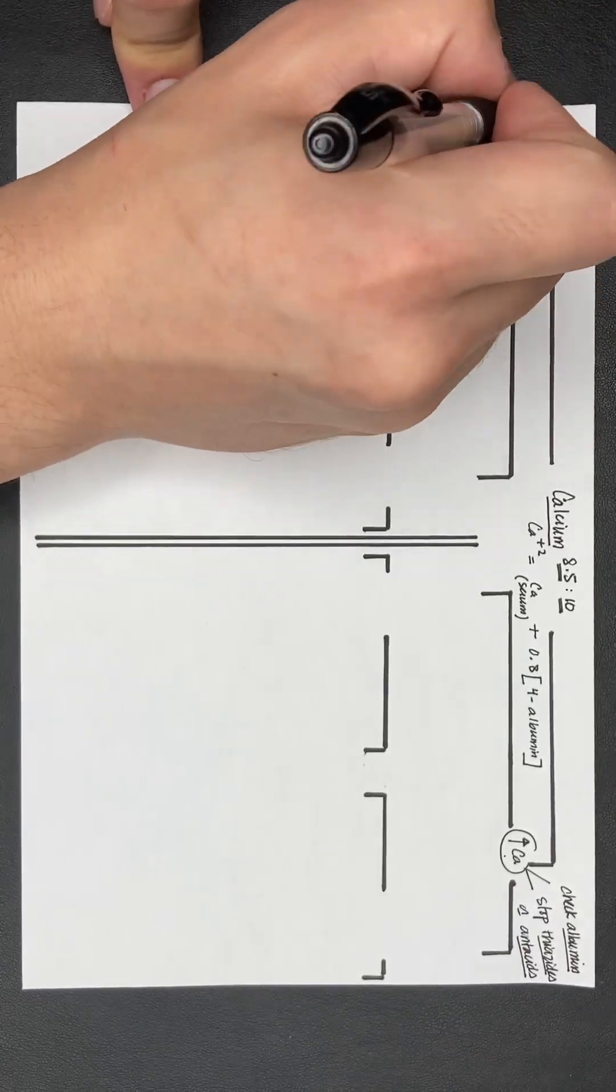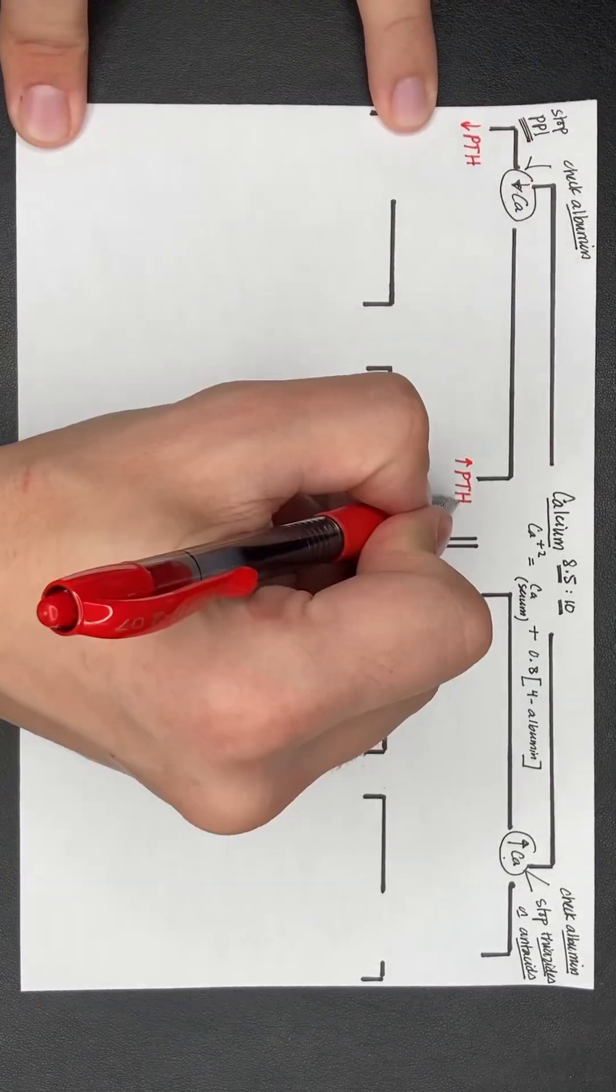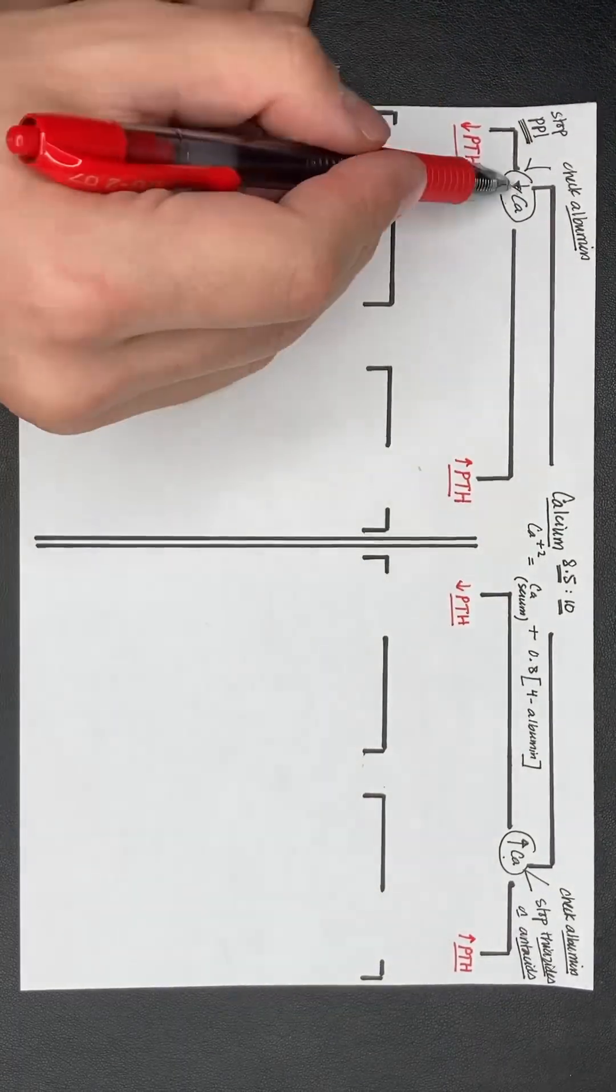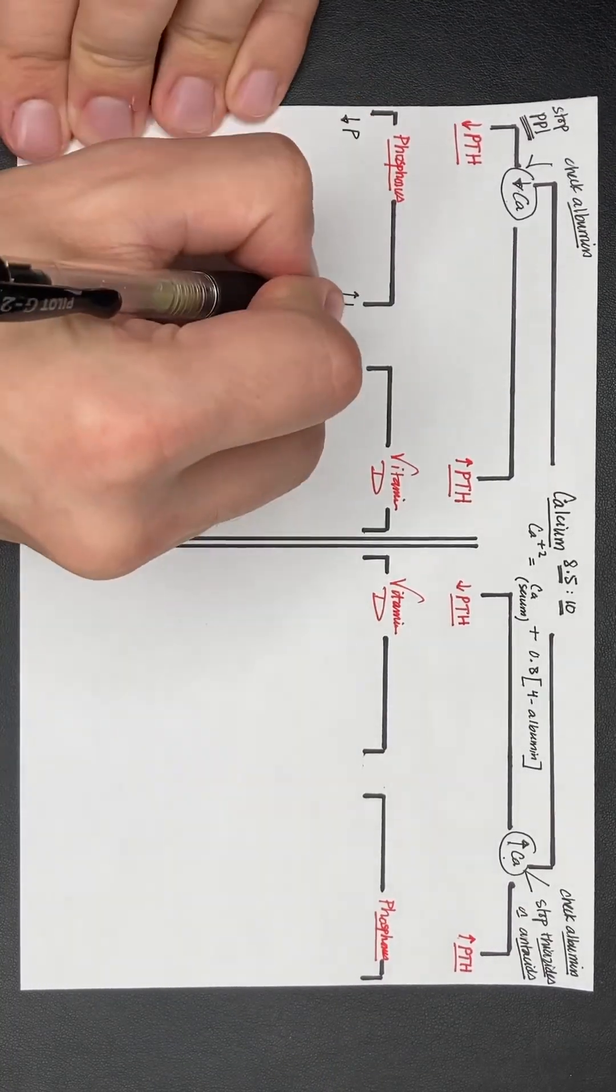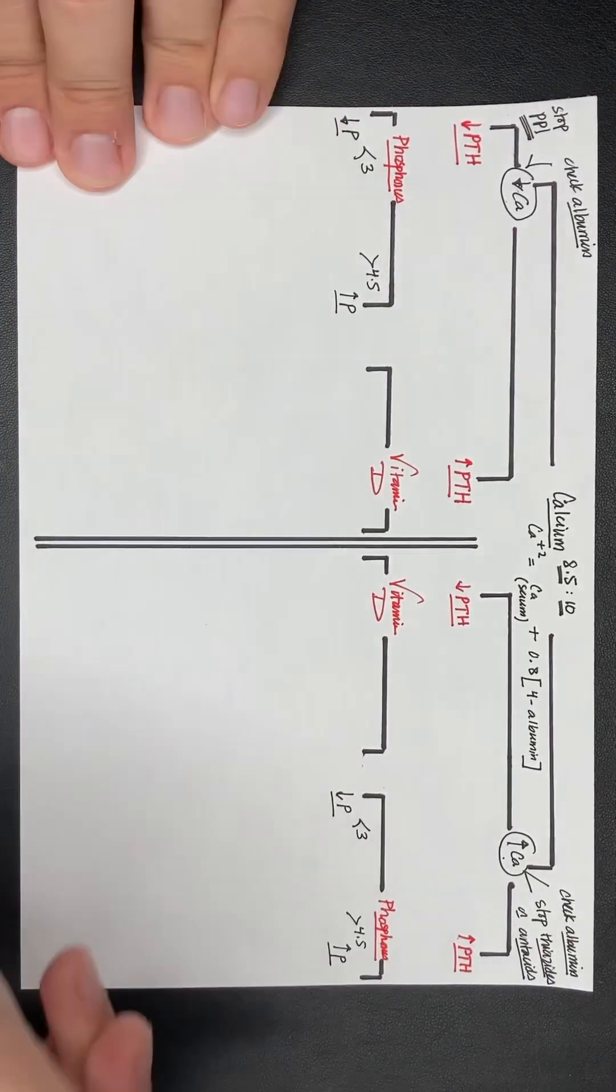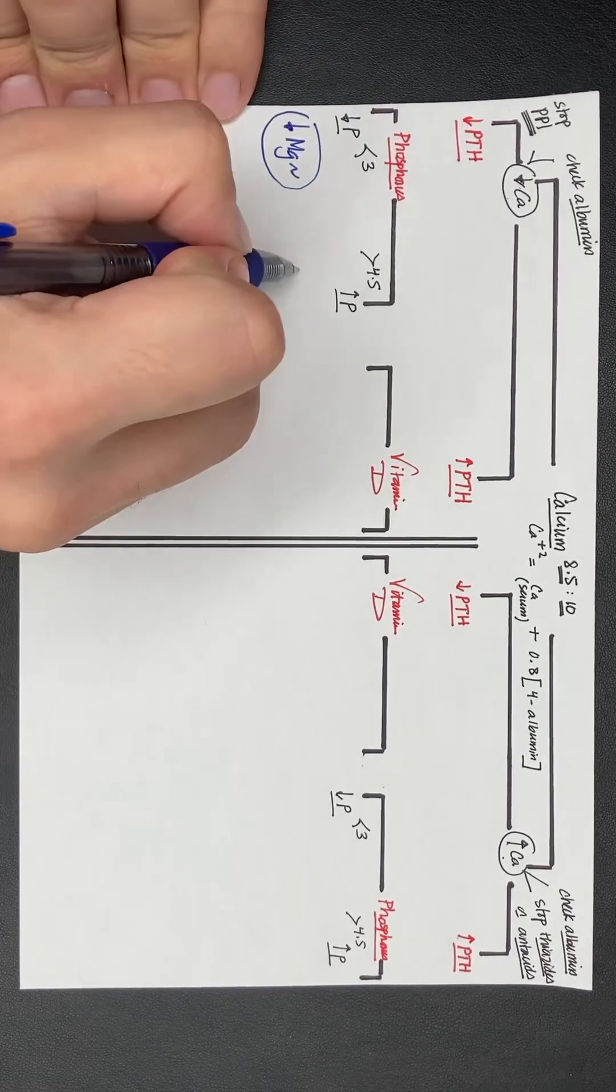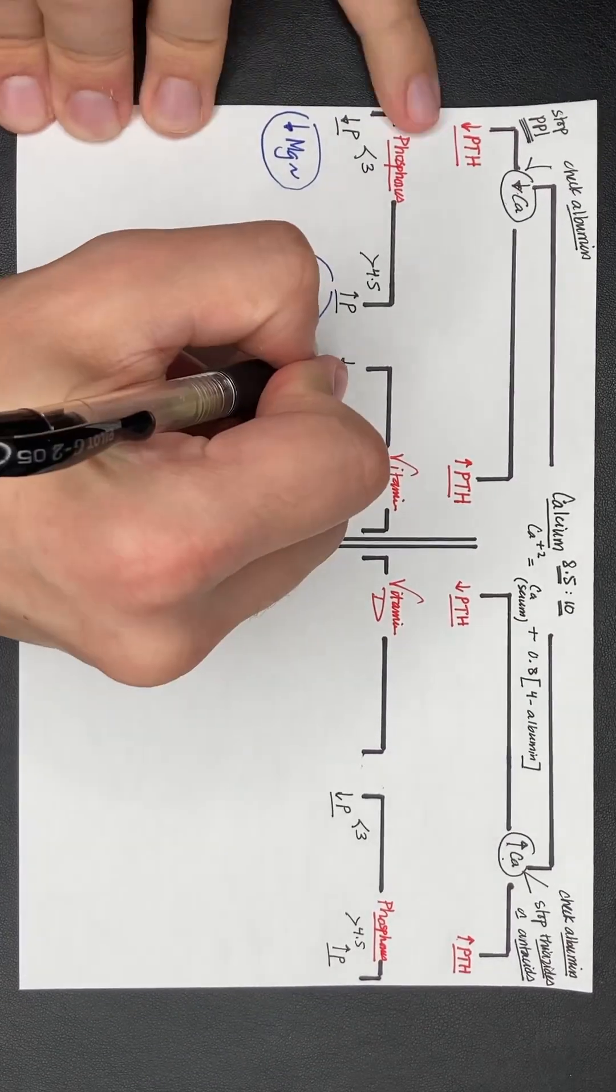If calcium and parathormone are both high or both low, then this is a gland problem. So you check phosphorus to check if there is hypo- or hyperparathyroidism and differentiate it from hypomagnesemia and familial hypocalcemic hypocalcuria.